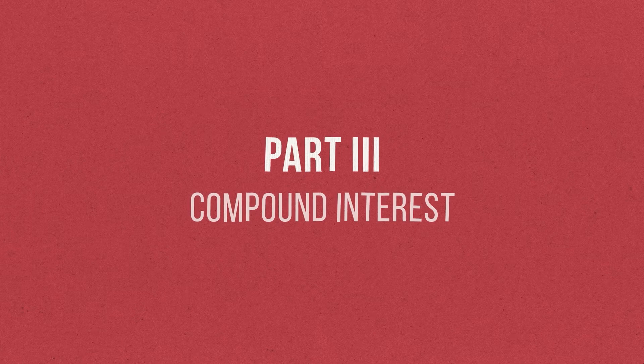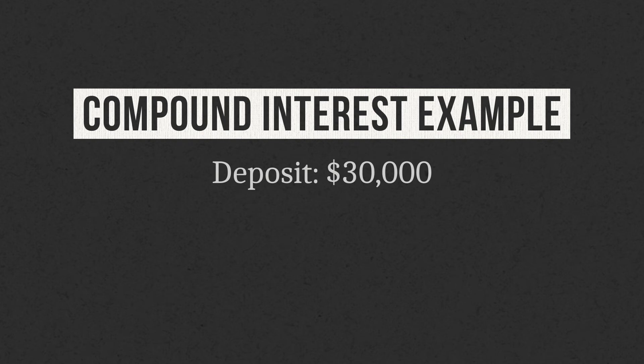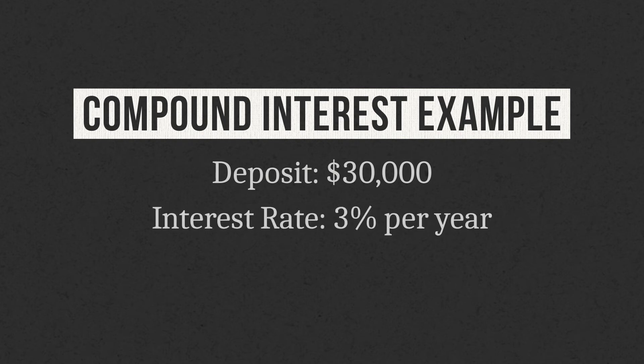Next, let's build on the concept of simple interest as we talk about compound interest. Let's pretend I deposit $30,000 into a high-yield savings account at my bank, which earns a whopping 3% interest per year. Remember, when we deposit money in the bank, we're essentially allowing the bank to borrow it, which is why they pay interest on deposits. That interest is calculated and paid on a monthly basis, just like with the car loan, except this time it's the bank paying me instead of the other way around.